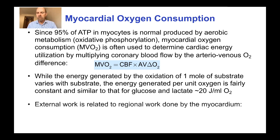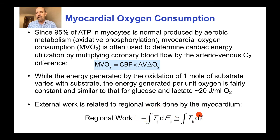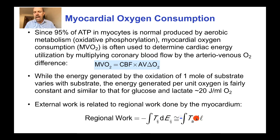The external work is related to the regional work done by the muscle. Regional work is the integral of stress times strain — with a minus sign, because this is work done by the muscle — or equivalently the active contractile tension times the length change of the sarcomere as a one-dimensional approximation. Again there is a minus sign because the positive active contractile tension produces a negative length change — a shortening of the muscle — during ejection of blood.